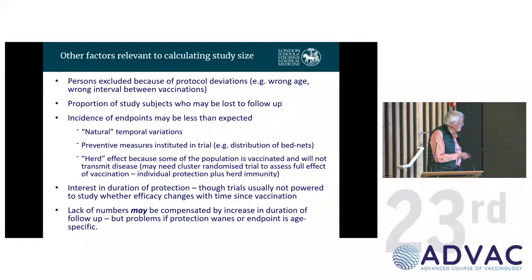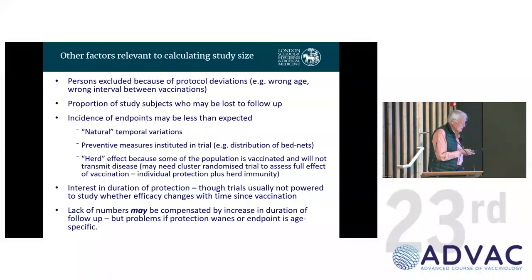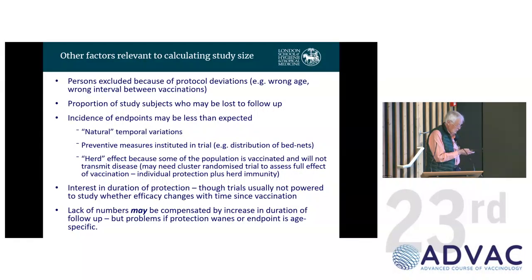There are other non-statistical factors to consider when planning trial size. The most important is that the incidence of endpoints may be less than expected — this is very common. In COVID it turned out the other way: far more endpoints than expected, so results came very quickly.